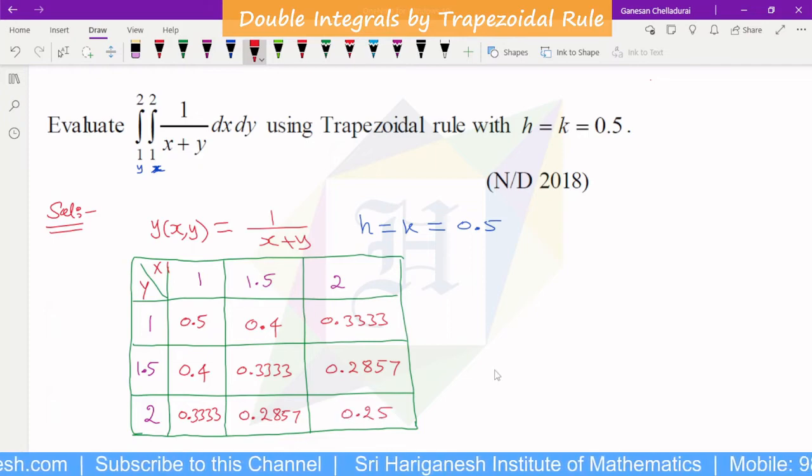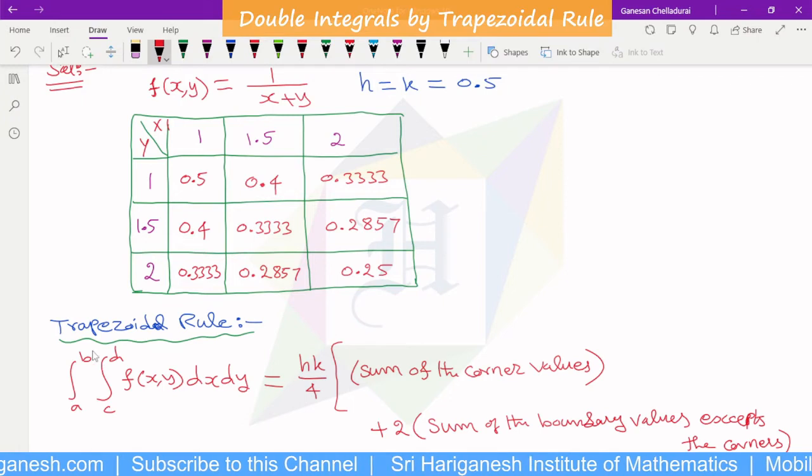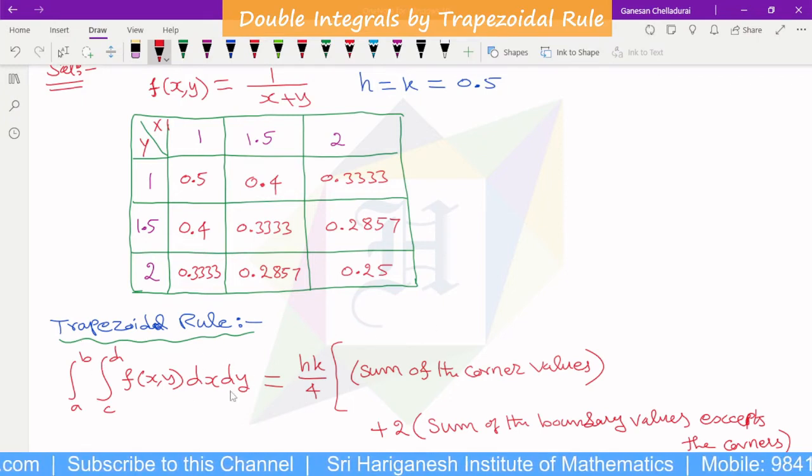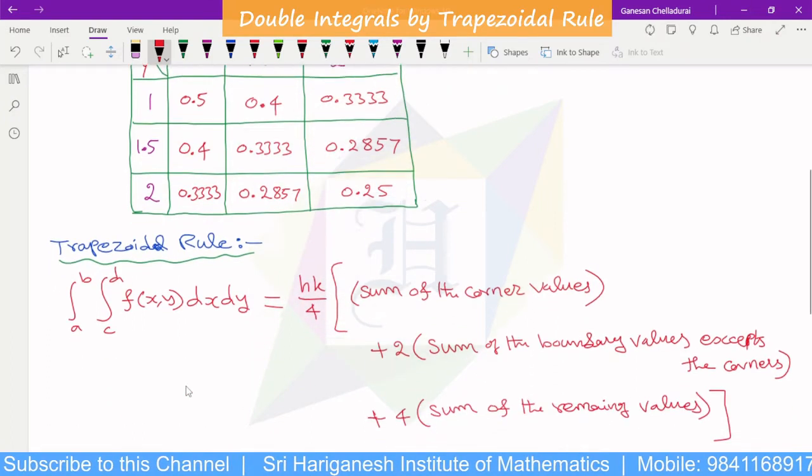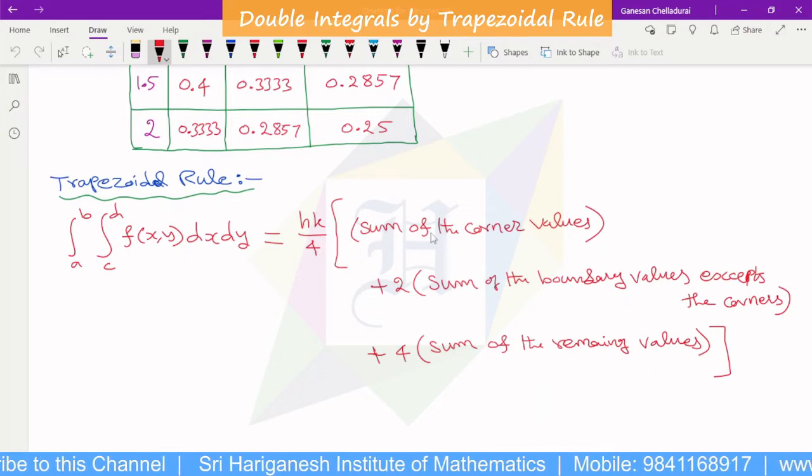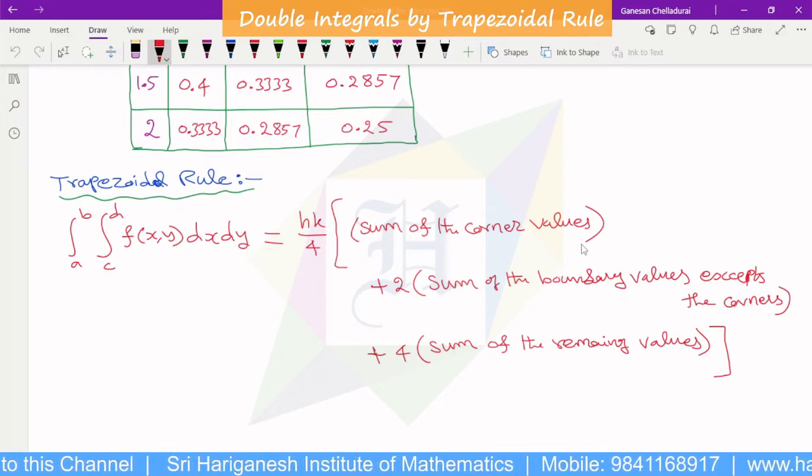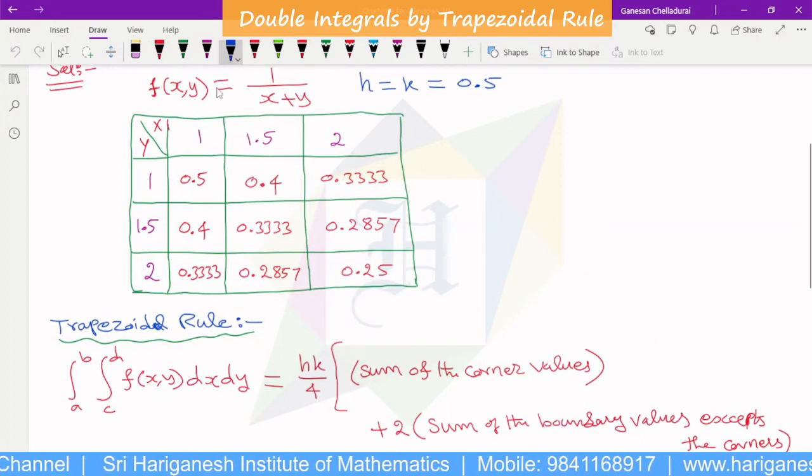Second, table fill up. Here we have to write table fill up. This is trapezoidal rule formula. What is the formula? Trapezoidal rule integral formula.